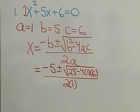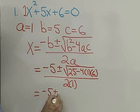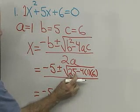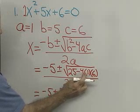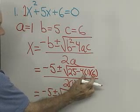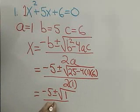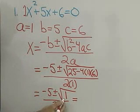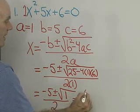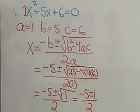Now I'll continue to simplify here. I'll end up with negative 5, plus or minus square root of 25 subtract 4 times 1 times 6, which is 24. 25 subtract 24 is 1. And then 2 times 1 is just 2. Continuing to simplify, square root of 1 is 1. So, I have negative 5, plus or minus 1, all divided by 2.